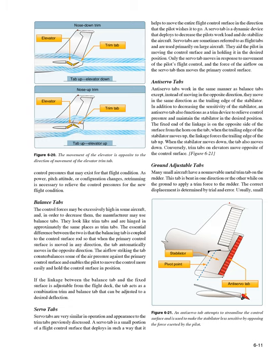Anti-servo tabs work similarly to balance tabs except they move in the same direction as the trailing edge of the stabilator rather than opposite. In addition to decreasing stabilator sensitivity, an anti-servo tab also functions as a trim device to relieve control pressure and maintain the stabilator in the desired position. When the trailing edge of the stabilator moves up, the linkage forces the trailing edge of the tab up as well; when the stabilator moves down, the tab also moves down. This contrasts with trim tabs on elevators, which move opposite to the control surface.